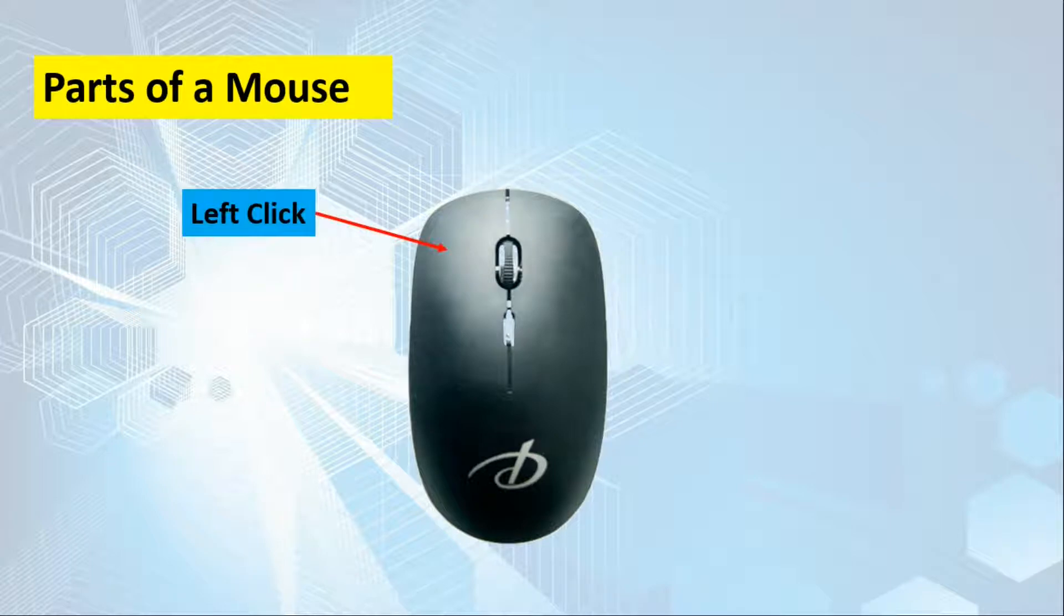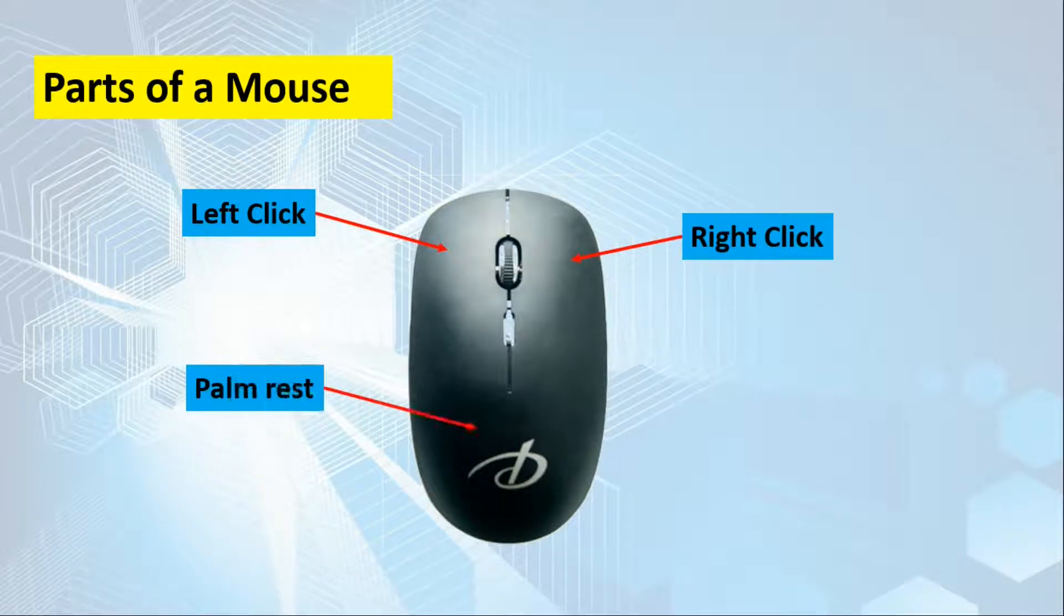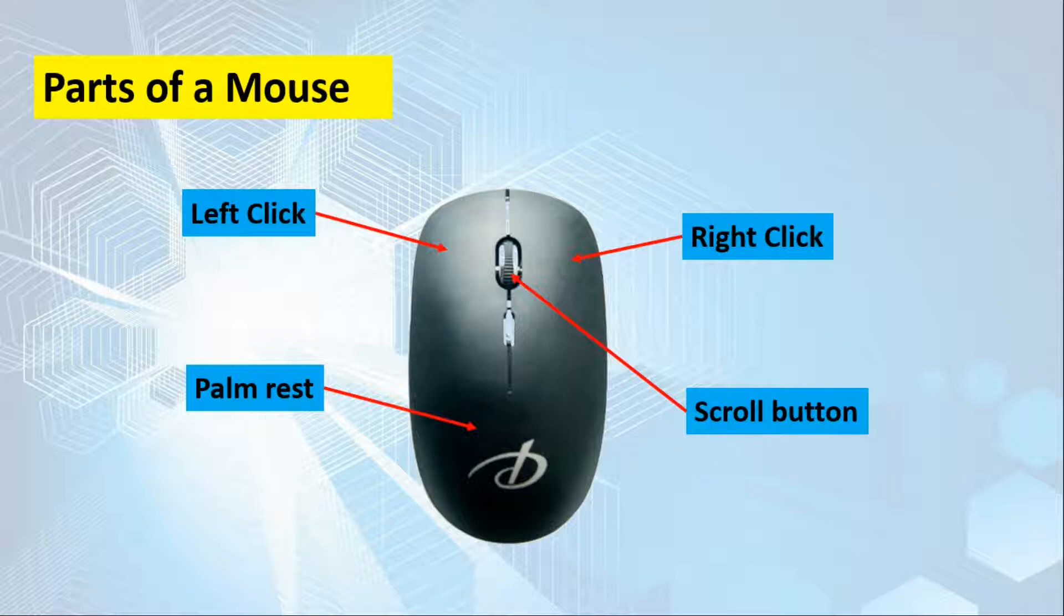On the left side, we have the left click. On the right side, we have the right click. And on the bottom part of the mouse, we have what we call the palm rest, where we place our palm to properly operate the computer mouse. And also, the scroll button that is located in between the left and right click.